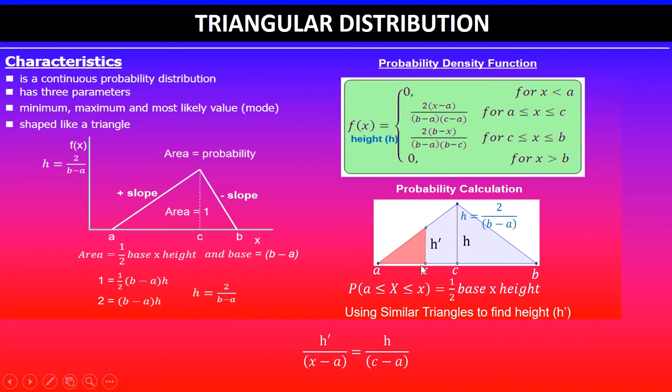This is the bigger one and that's the smaller one here. I'm using this small triangle, so h dash over the base of this smaller triangle, which is (x - a), so h dash over (x - a) is equal to h, which is the bigger triangle, h over the base of the bigger triangle, which is (c - a).